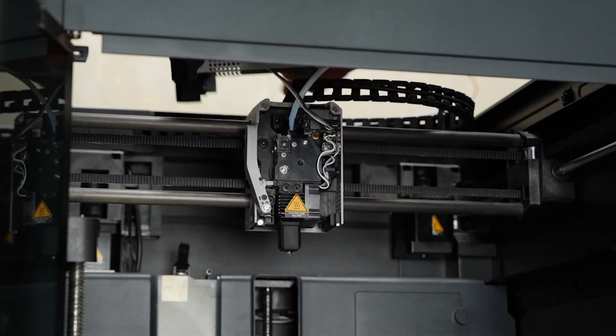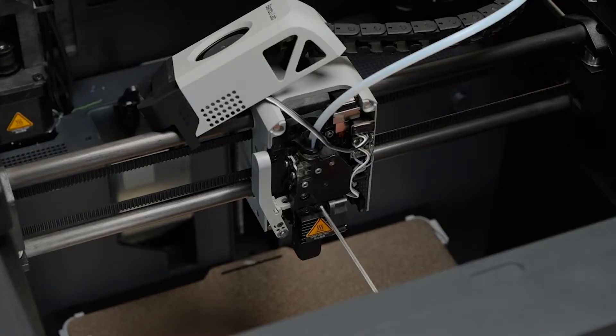Begin by removing the front housing of your 3D printer. This will give you access to the internal components.